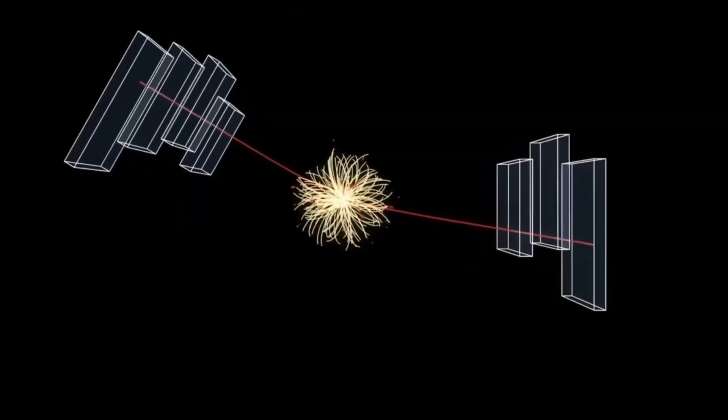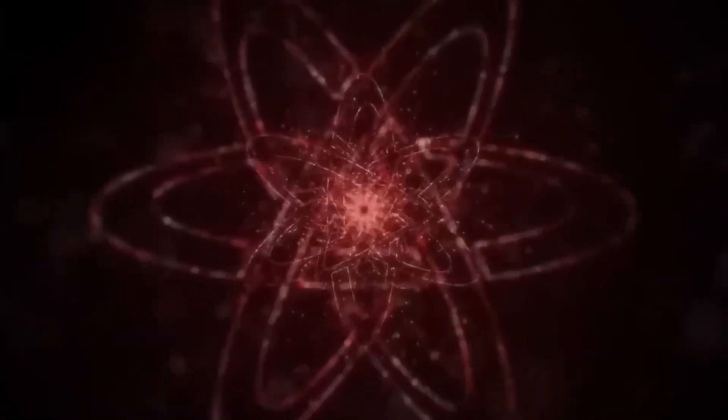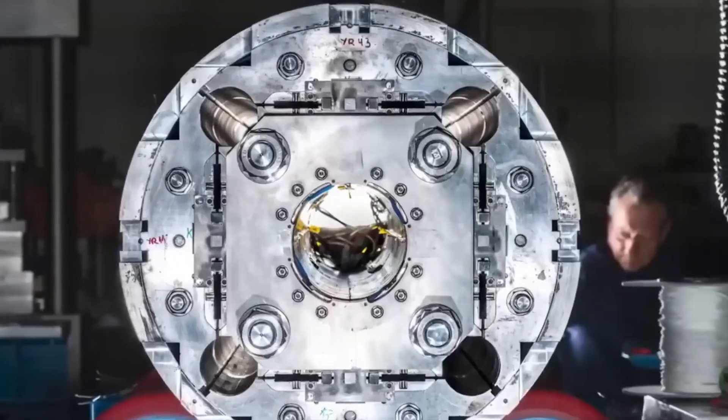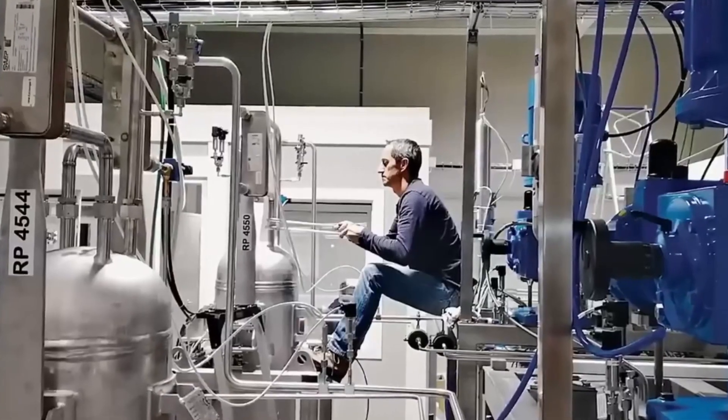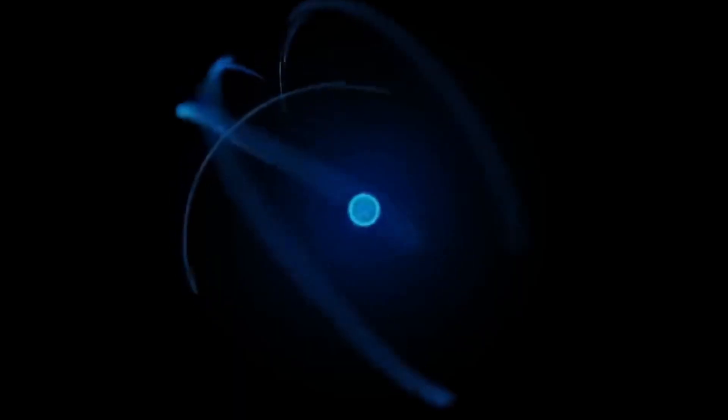When Chang'e 5 drilled deeper into the crust, it unearthed these components and delivered them for study. Analysis found that while each glass bead only contains trace amounts of water, the sheer volume of such beads spread across the moon's expanse could represent an unexpectedly vast water reserve.